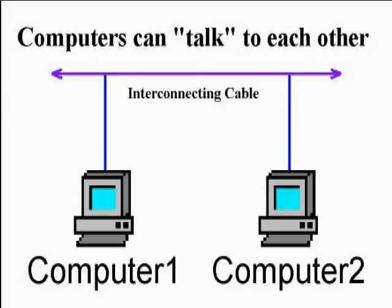They've used a lot of different technologies to let computers send messages to each other. Computers send messages on light waves and radio waves and infrared beams and on all kinds of wires — fat cables and skinny cables, ribbon cables, telephone cables and modems with cables.